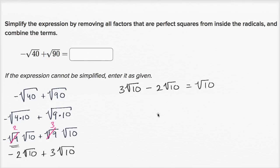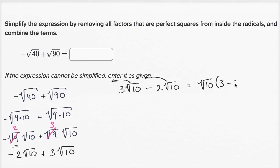Another way to think about it is we could factor out a square root of 10 — undistribute it, using the distributive property in reverse. That would be the square root of 10 times three minus two, which is just one. So you're left with the square root of 10. All of this simplifies to the square root of 10.